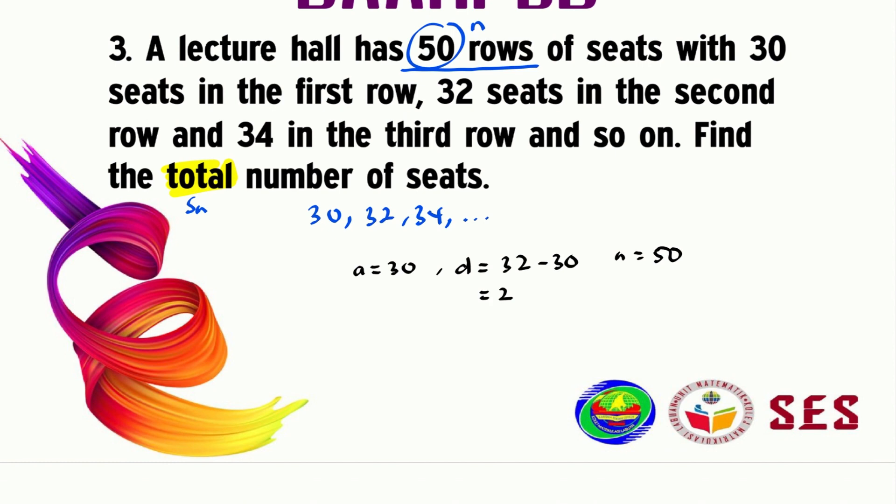Substitute everything here. We've got a already, we've got d, and we've got n. So we actually need to calculate for the S50 equals 50 over 2, times 2 times 30, plus 49 times 2.